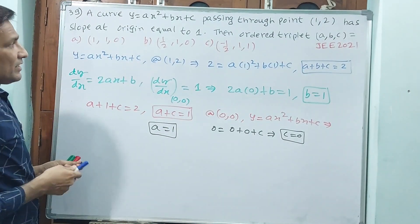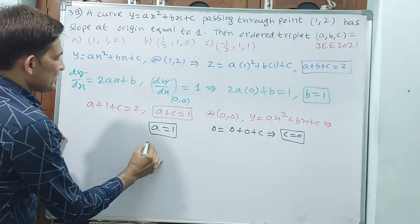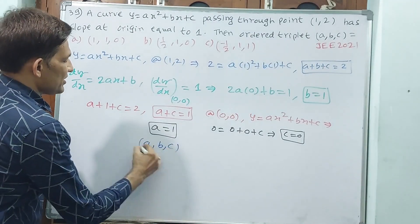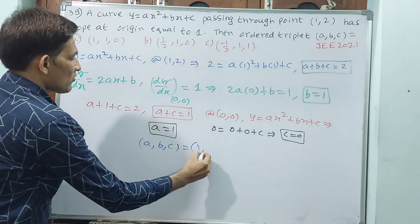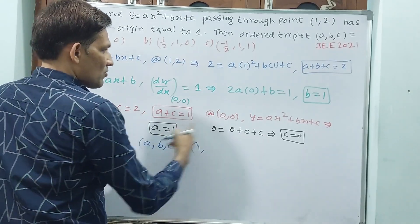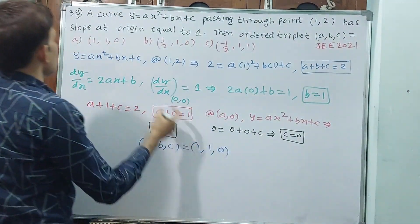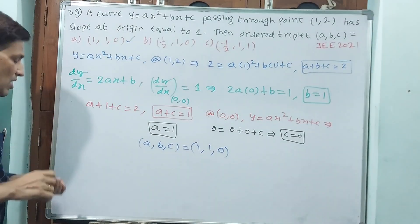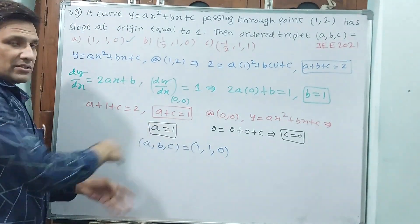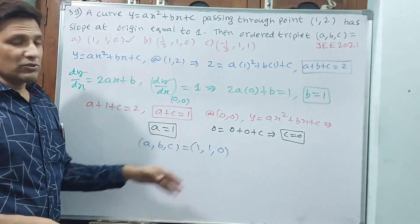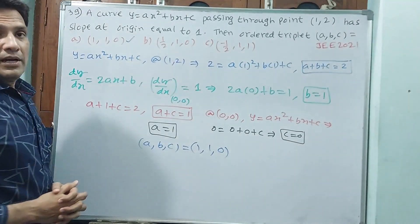Then what is the (a, b, c) triplet? The ordered triplet is: for a you write 1, for b you write 1, for c you write 0. So (1, 1, 0) is your answer. The order is declared - you should not change this order. (a, b, c) means a, b, c only. Let us go for the next question.